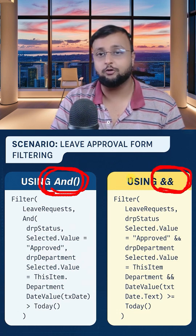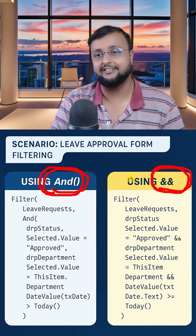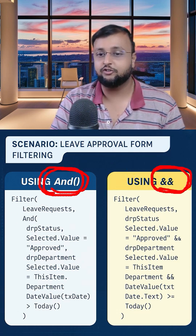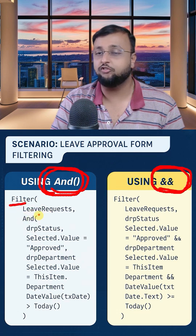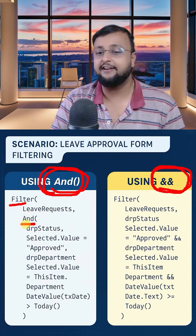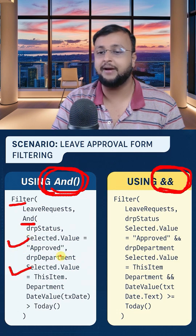Technically and performance-wise, there is no difference between these two — it is only about readability. When you write the filter function and want to use an And operation, you can use the And function, and inside that you can add multiple conditions separated by commas, like this way.